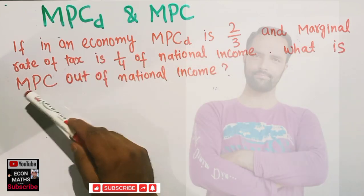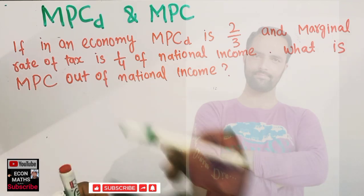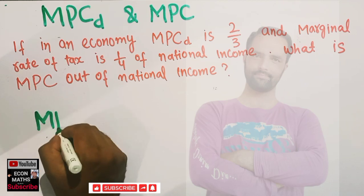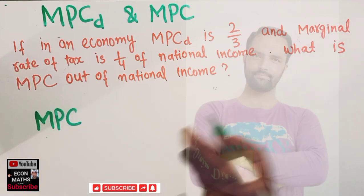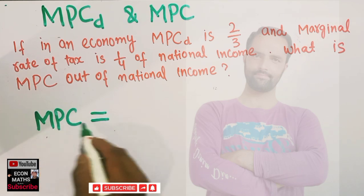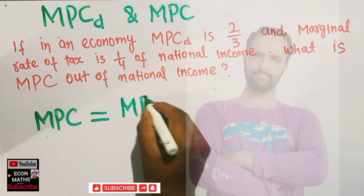what is marginal propensity to consume out of national income? The relationship between marginal propensity to consume out of national income is simply given by: MPC is equal to marginal propensity to consume out of